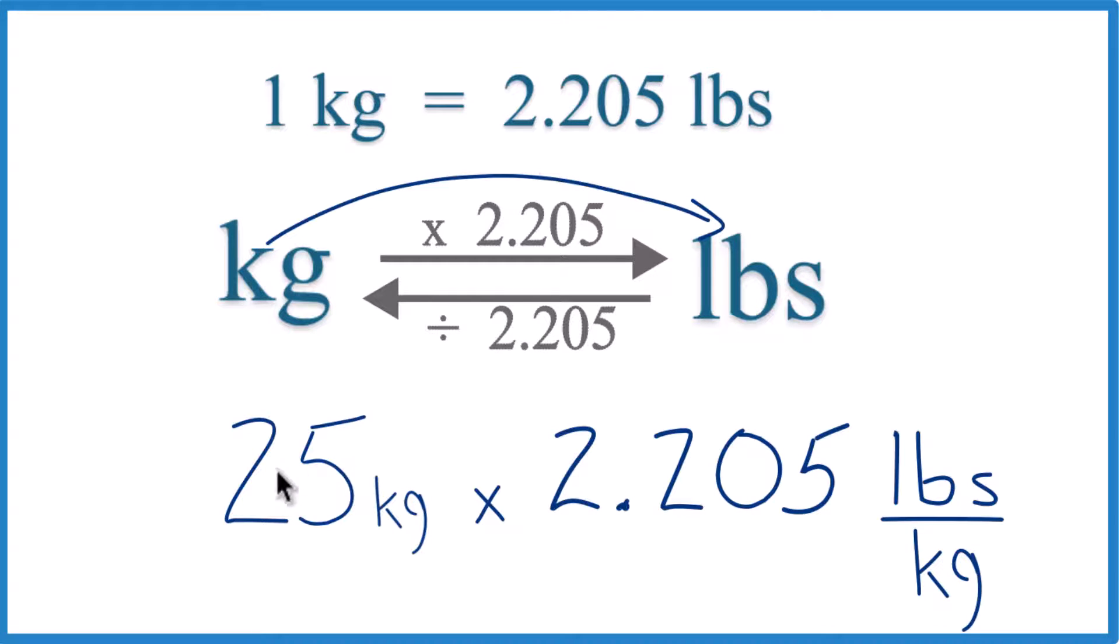Because this way, we multiply, we have kilograms on top and the bottom. They cancel out, and we're left with pounds. That's what we're looking for.